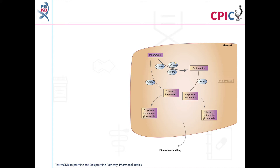This is the PharmGKB imipramine and desipramine pharmacokinetics pathway. A link to this pathway is provided in the description below this video. This video will first focus on metabolism of imipramine by CYP2C19, followed by metabolism of imipramine by CYP2D6.